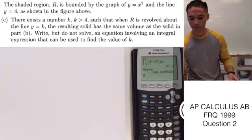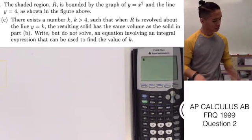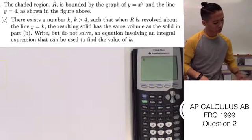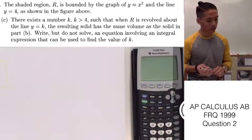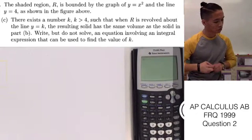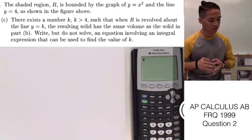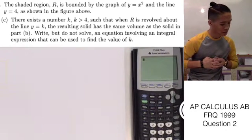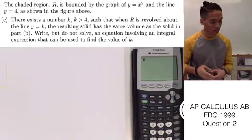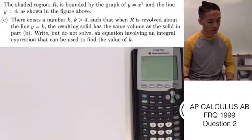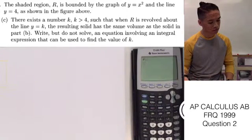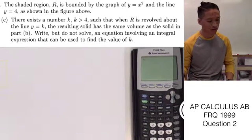Let's go ahead and move on to part C. Now, part C is saying there exists a number k, for k is greater than 4, such that when R is revolved about the line y equals k, the resulting solid has the same volume as the solid in part B. Write, but do not solve, an equation involving an integral expression that can be used to find the value of k.